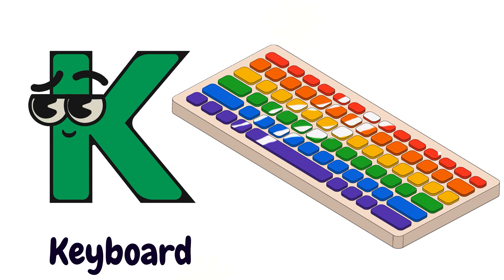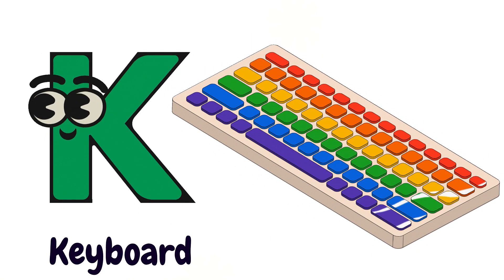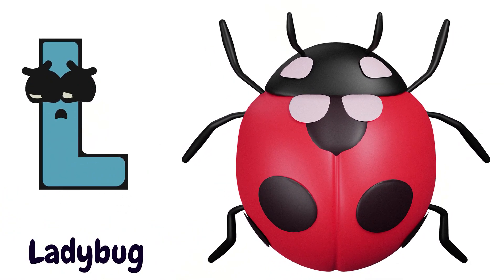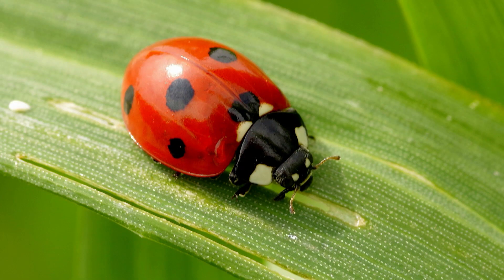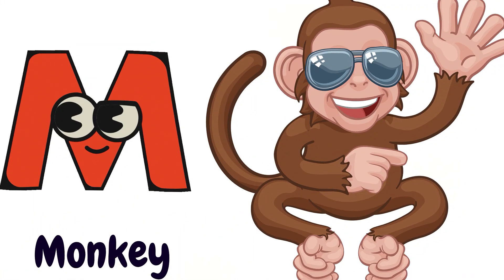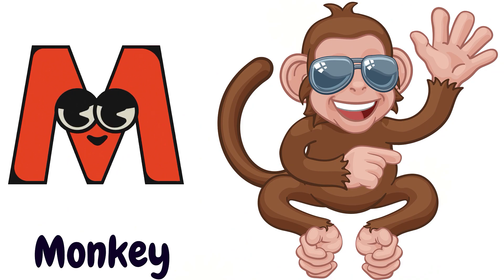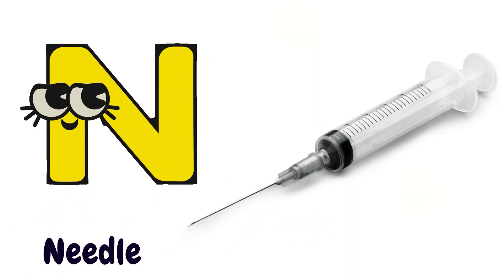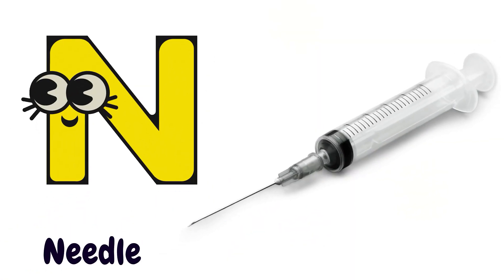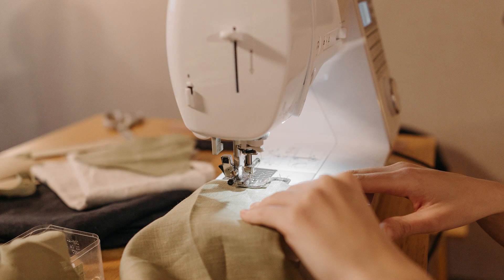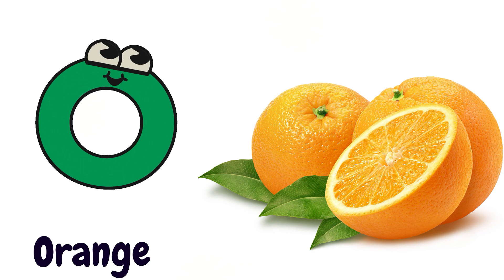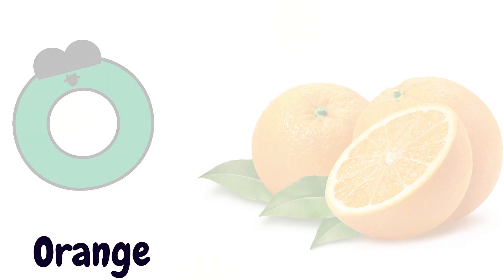K is for Keyboard. K, K, K, K, K, Keyboard. L is for Ladybug. L, L, L, L, L, Ladybug. M is for Monkey. M, M, M, M, M, Monkey. N is for Needle. N, N, N, N, N, Needle. O is for Orange. O, O, O, O, Orange.